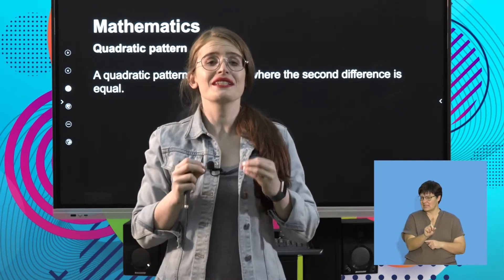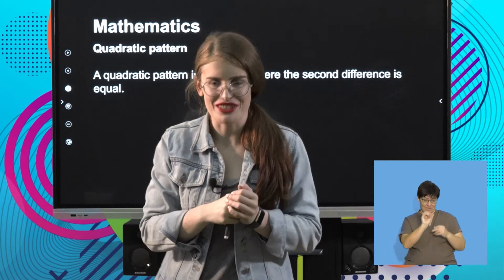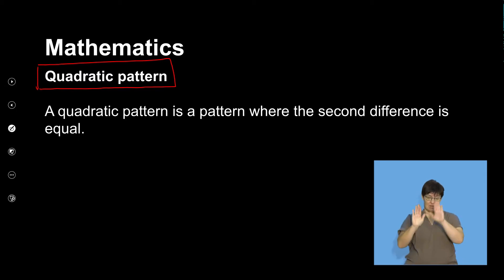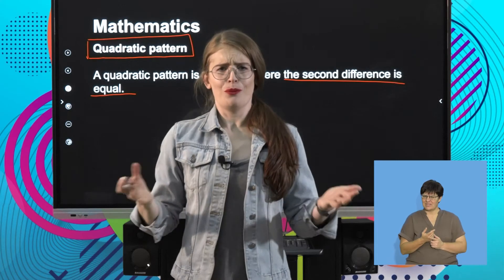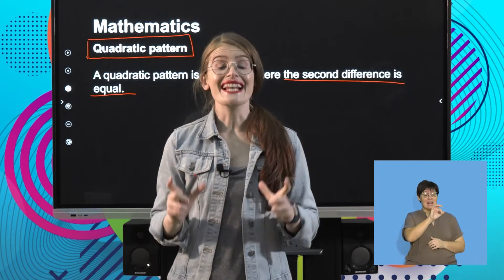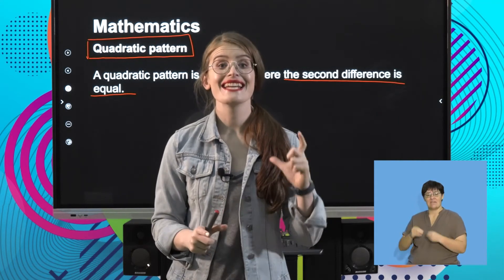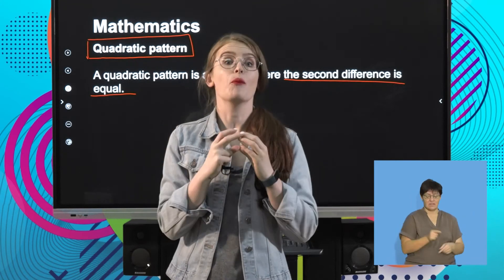Just an important reminder: we always need to see the relationship between the term value, the common difference, and the term number. We are now going to be looking at something called a quadratic pattern. A quadratic pattern is a pattern where the second difference is equal. A linear pattern has first differences equal; a quadratic pattern has second differences equal.